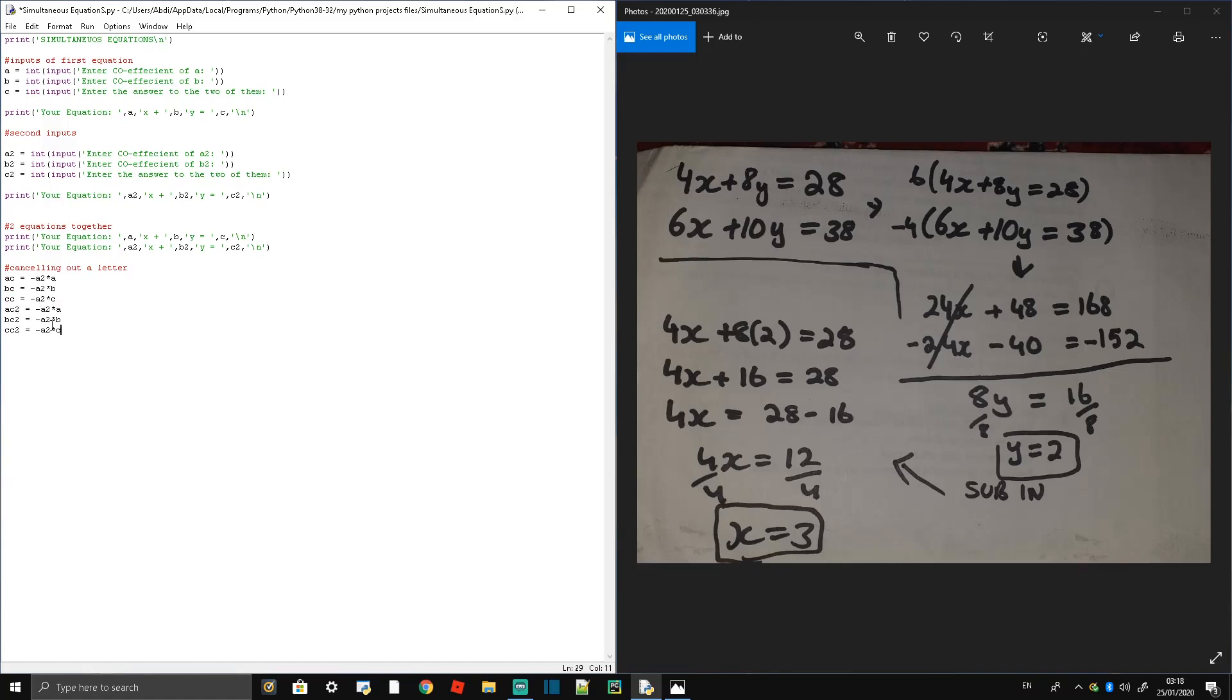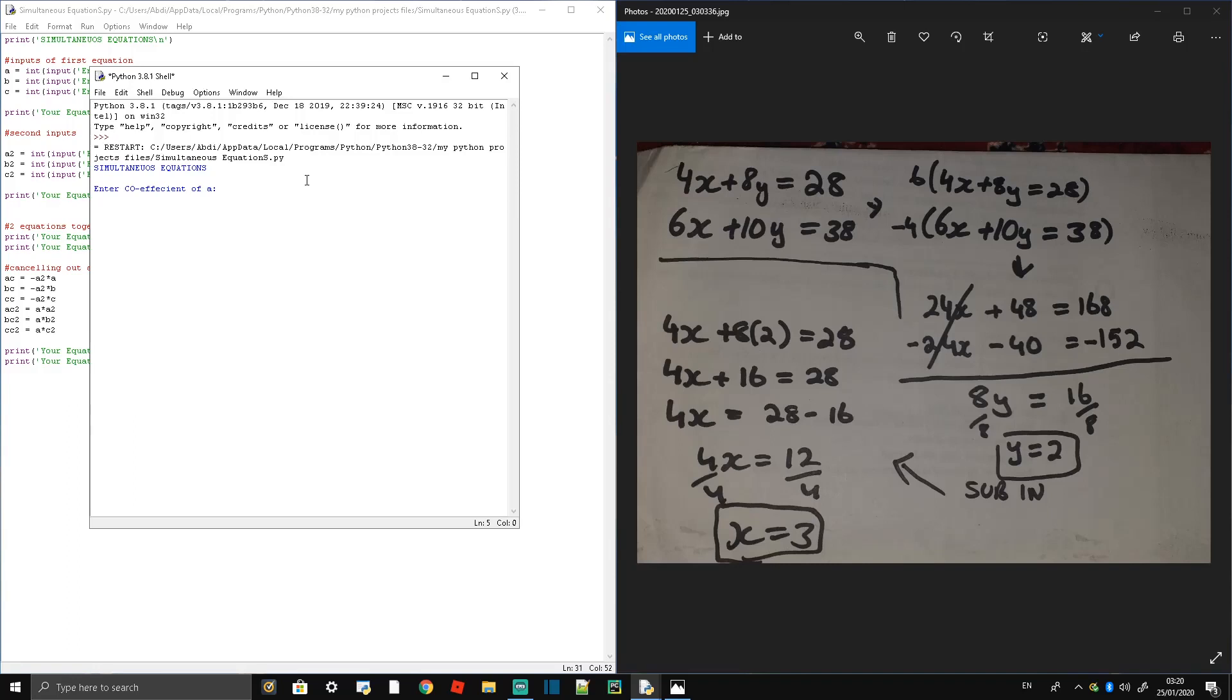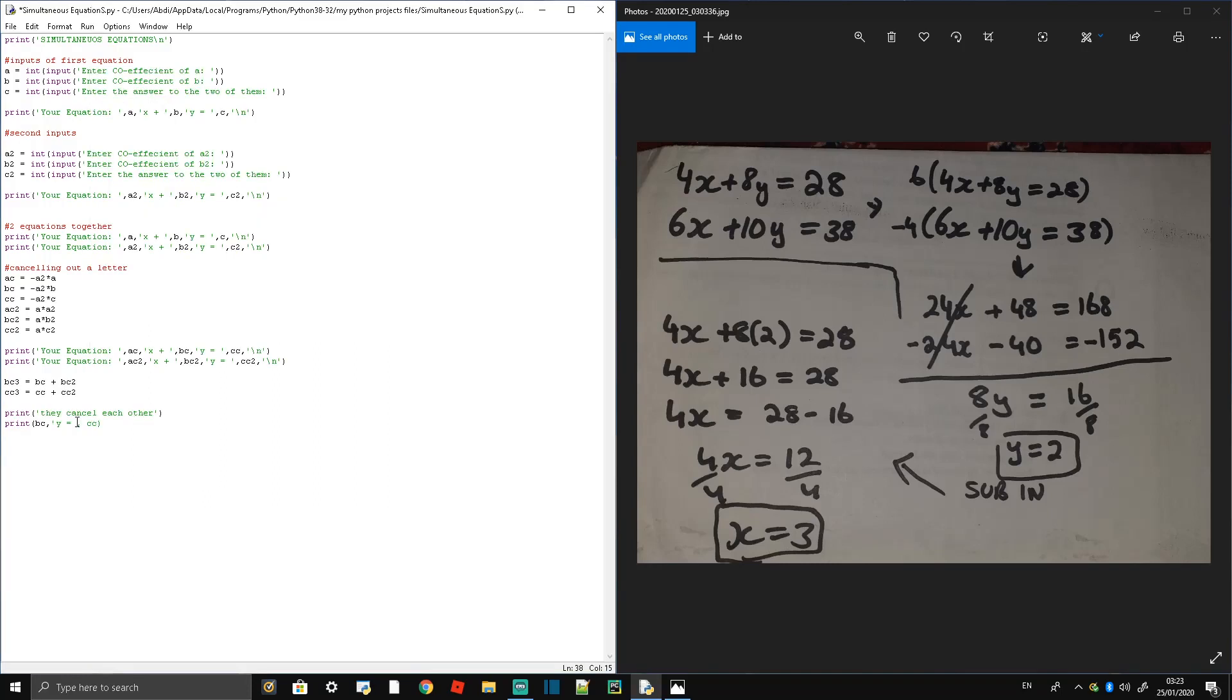Since you know you can't solve it with two unknowns, we're going to cancel x's first. The method we're using to cancel the x's is just multiplying whatever the first x is by the other one—like multiplying 4 by the other equation and then 6, or minus 4 by the other equation, so they always cancel each other out.